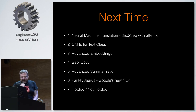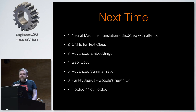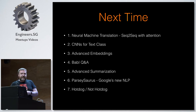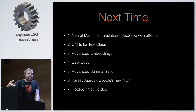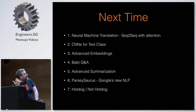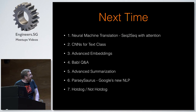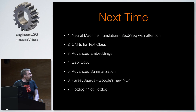Next time we were thinking of getting you to vote on topics. Definitely neural machine translation is a really interesting topic — it basically uses sequence-to-sequence with attention. Advanced summarization also uses attention and that increases abilities a lot. CNNs for text classification — I talked about that. Advanced embeddings, Facebook's Q&A, or Parsisaurus — has anyone heard of Parsisaurus? It's the new pre-made models from Google that do what Parsy McParsface does.